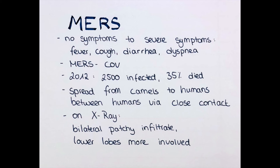Between humans it spreads via very close contact or respiratory droplets or other fluid exchange. The symptoms range from none at all to very severe illness or death, and typically include fever, cough, diarrhea, and dyspnea. On an X-ray a bilateral patchy infiltrate can be found with the lower lobes more involved, due to gravity causing inhaled particles to sink into the deeper areas of the lung.